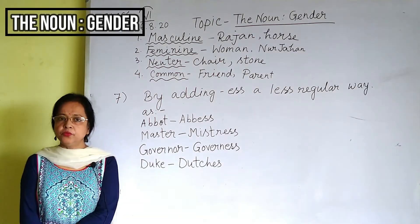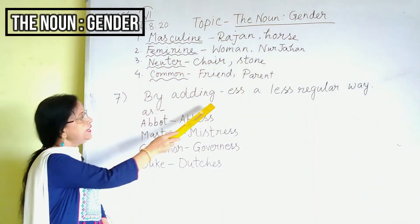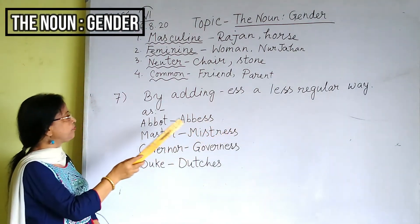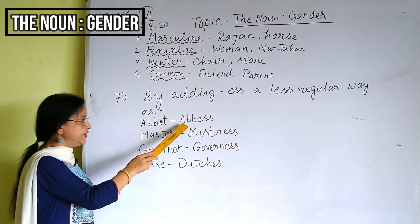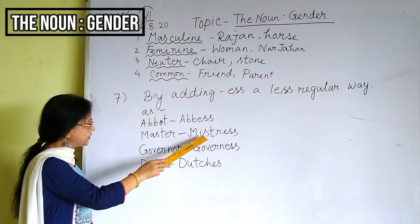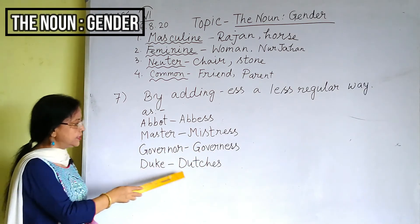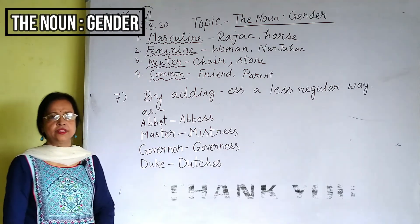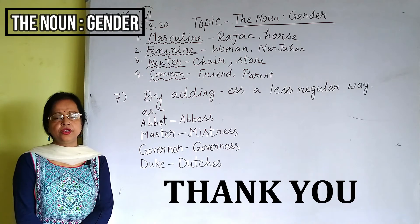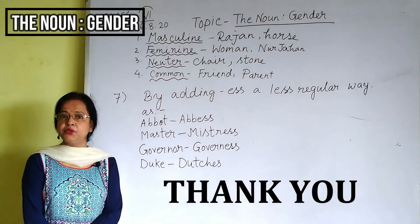Now move on to number 7 — forming feminines by adding -ESS in a less regular way. My dear children, I hope you have enjoyed this video. Thank you.